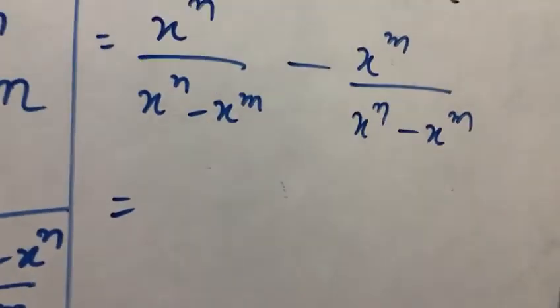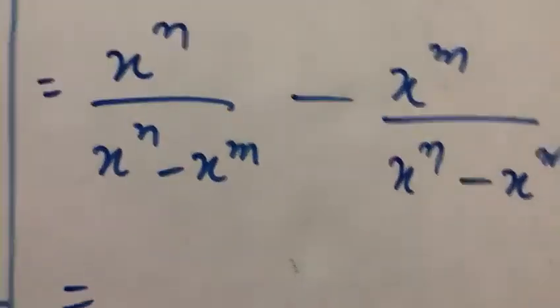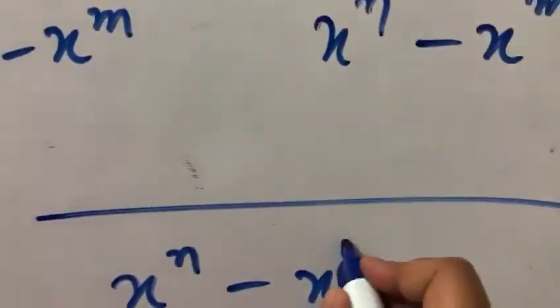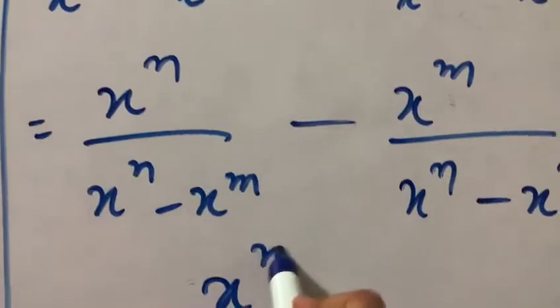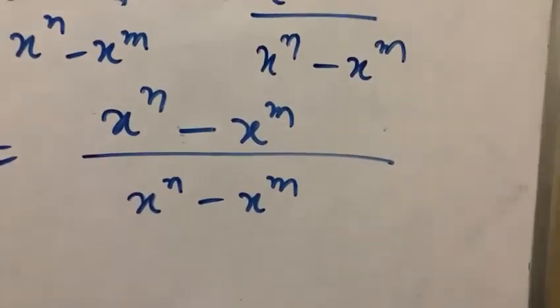When the denominator is the same, the numerators will be added or subtracted directly. So similarly, we write the denominator x raised to power n minus x raised to power m as it is, and in the numerator x raised to power n minus x raised to power m. Now see, the numerator and denominator are the same.